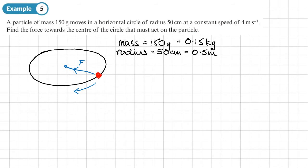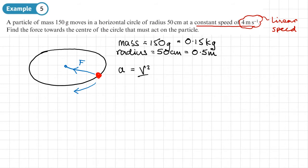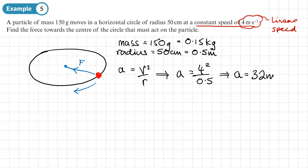The question gives a constant speed of 4 meters per second — from the units, this is the linear speed. So to find the acceleration, I'll use V squared over R. That gives an acceleration of 4 squared over 0.5, which equals 32 meters per second squared, acting towards the center of the circular path.